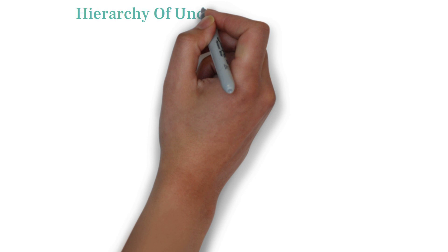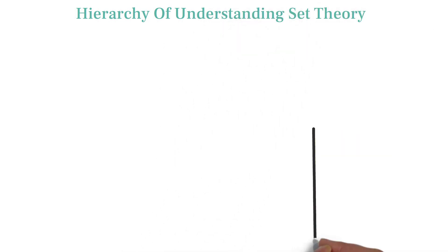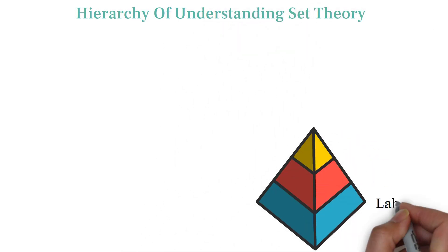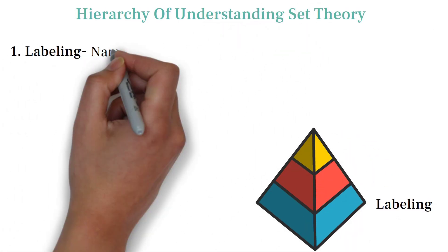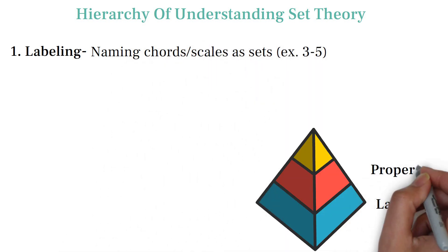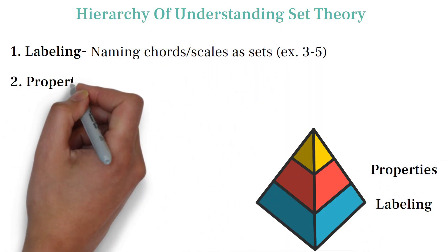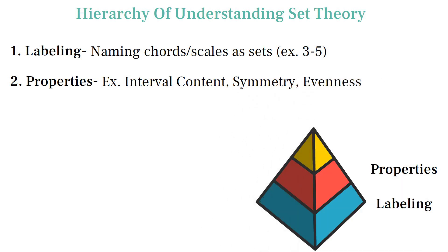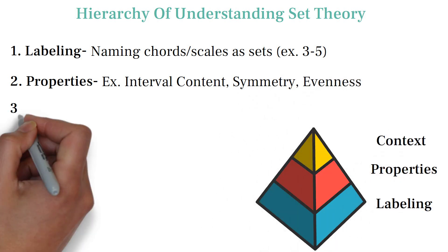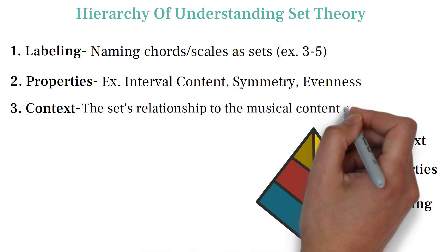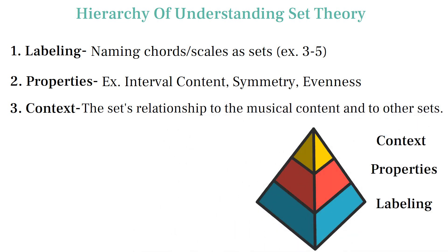Here are the three steps to our understanding of set theory. First, Labeling: we learn to apply labels to sets. Second, Properties: we understand the properties of sets when we look them up. Third, Context: we understand the larger context in which a set is situated in.